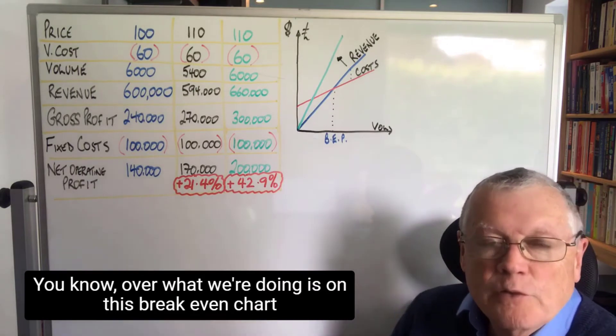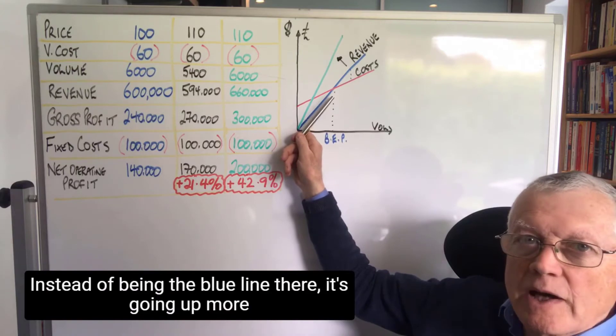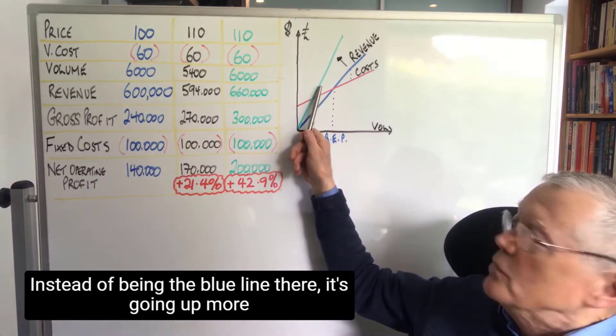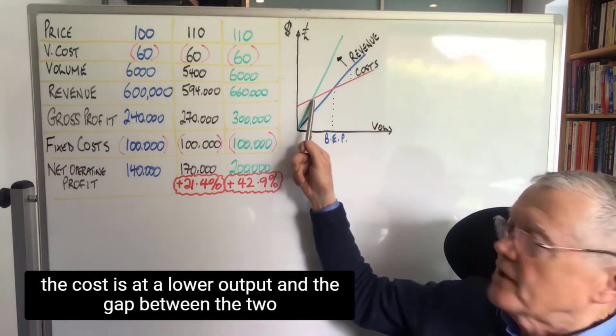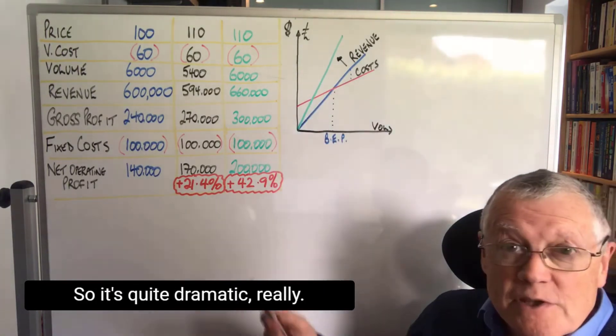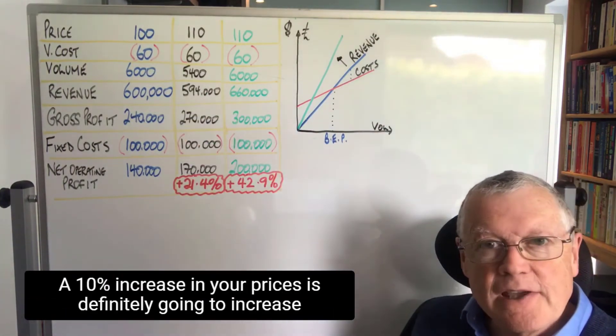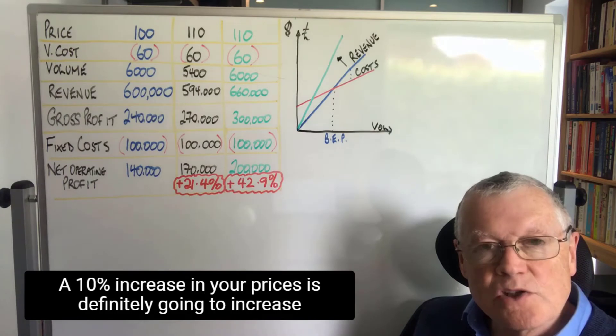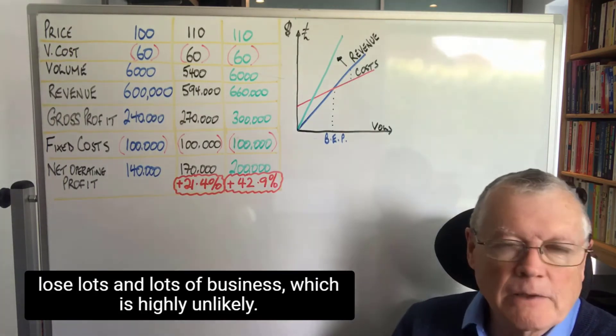Over 40%. What we're doing is on this break-even chart, our revenue, instead of being the blue line there, it's going up more steeply, which means our break-even point where they cross the costs is at a lower output, and the gap between the two is much bigger. So it's quite dramatic really - a 10% increase in your prices is definitely going to increase your bottom line unless some catastrophe happens and you lose lots and lots of business, which is highly unlikely.